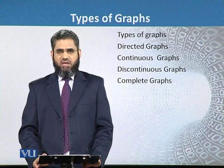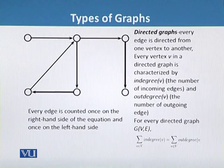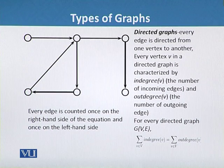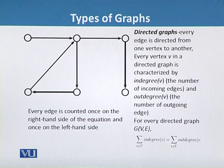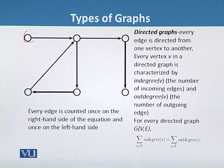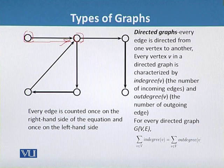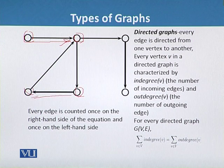In the directed graph, many bioinformatics problems can be solved. We can use directed graphs to solve different types of bioinformatics problems, in which every edge is directed from one vertex to another. We can see in this diagram: this is one vertex, this is the second vertex, and this edge represents the direction — so this is the directed graph.